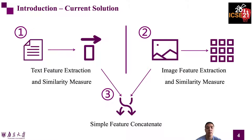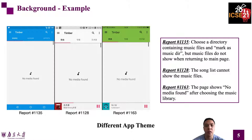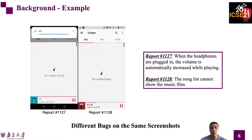We give three examples to illustrate our claim. In the first example, all three reports describe the loading failure of music resource files. However, the image color feature is one vital component of the report surrogate. App screenshots with different colors will be recognized as different screenshots even if the reports are describing the same problem. In the second example, two reports use screenshots of the same app activity, and the image feature extraction algorithm will assign a high similarity between these two screenshots. However, according to the bug descriptions, the two reports describe completely different bugs. For report 1128, we can extract the text 'no media found', and for report 1127, we can extract the volume widget beside the prompt information. A deep preview is designed to identify these different problems.